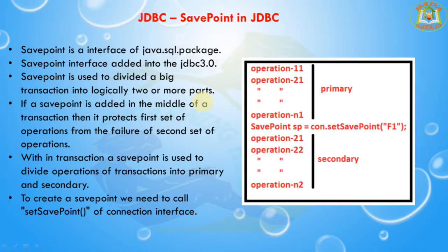If a SavePoint is added in the middle of the transaction, it protects the first set of operations from the failure of the second set of operations. For example, if you are doing different sets of operations where the first set succeeds and the second set fails, the total transaction fails and the first set is also rolled back automatically.